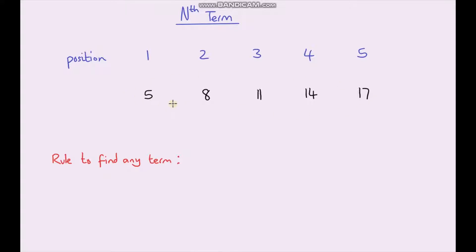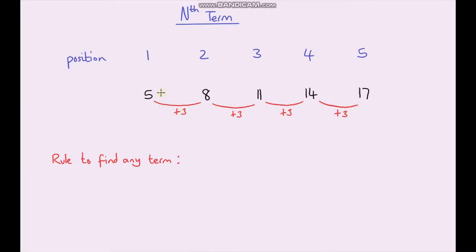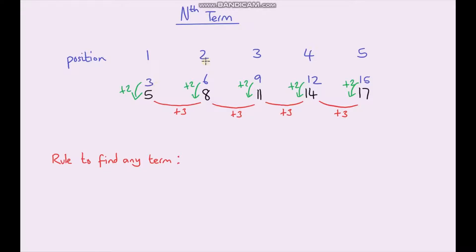Let's have a look at this sequence here. If we look at the difference between each term, it looks like it's going up by 3 each time — we're adding on 3 every time. So this sequence is similar to a 3 times table because it's going up by 3 each time, but it's just been shifted slightly. If we write down our 3 times table, we can see that it's been shifted by 2 each time. So we can say the rule that connects the position number with our sequence is: we multiply our position by 3 and then add 2.